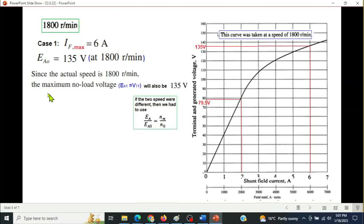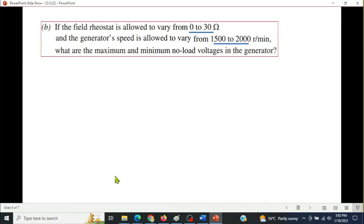So maximum value 135, minimum value. So minimum no-load voltage is 79.5 volt. So part A complete, now part B.